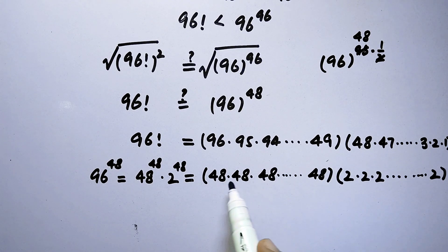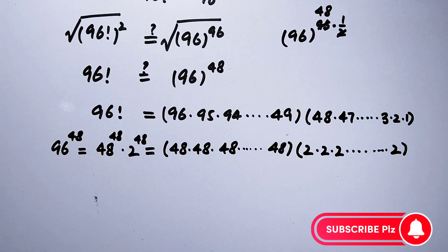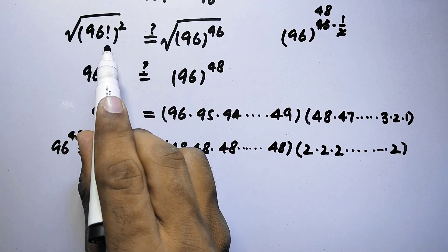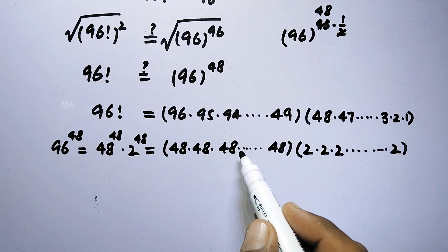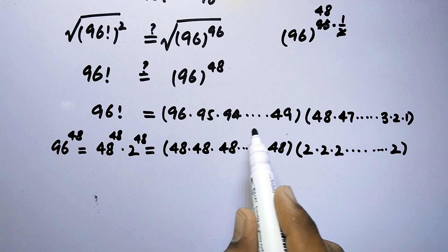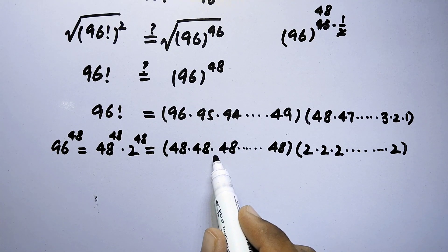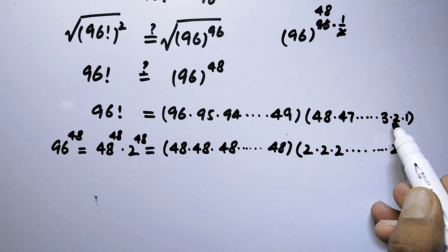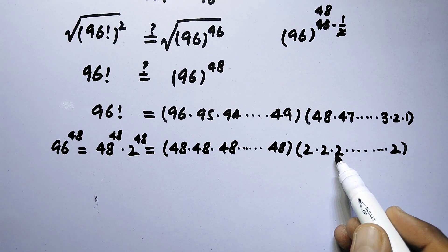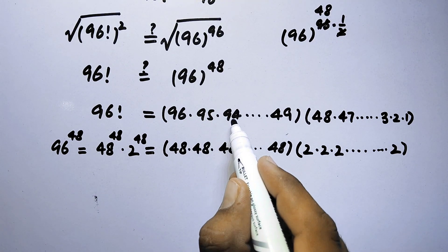Now we have two series of numbers in two groups on each side, and we will inspect the larger value by comparing each number of each series. There are 48 numbers in the first group of the factorial, to be compared with the 48 constant values of 48 to the power 48. Similarly the second group of the factorial has 48 values in descending order to compare with the other group.